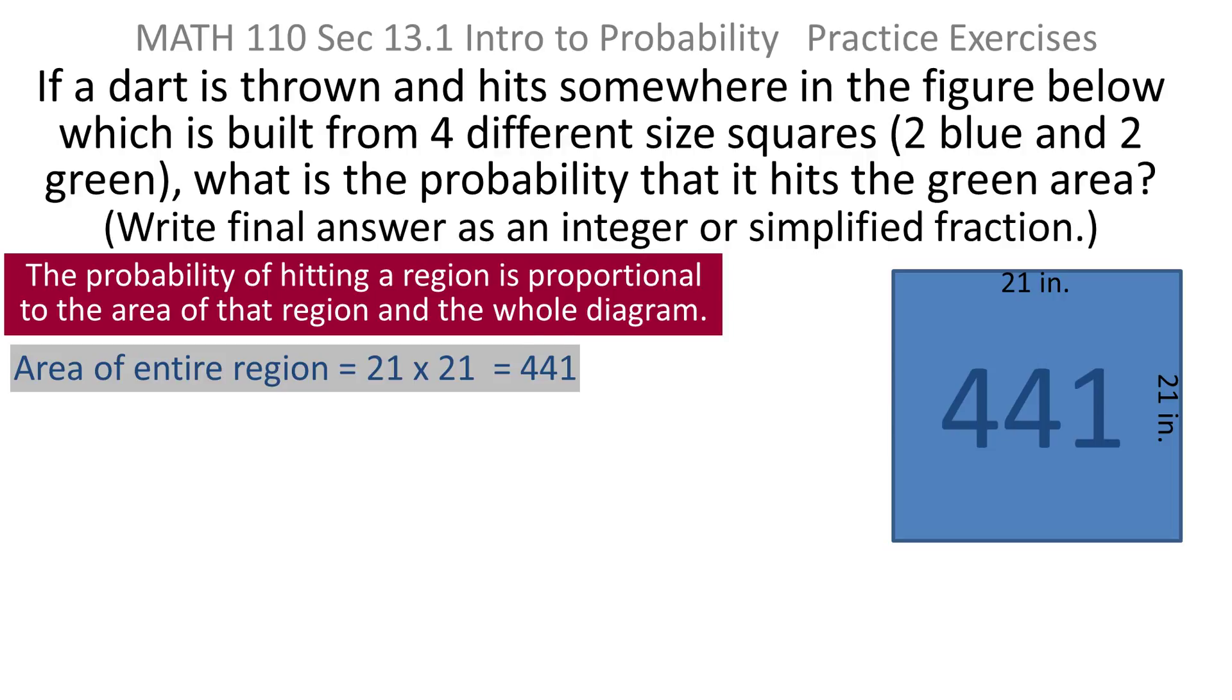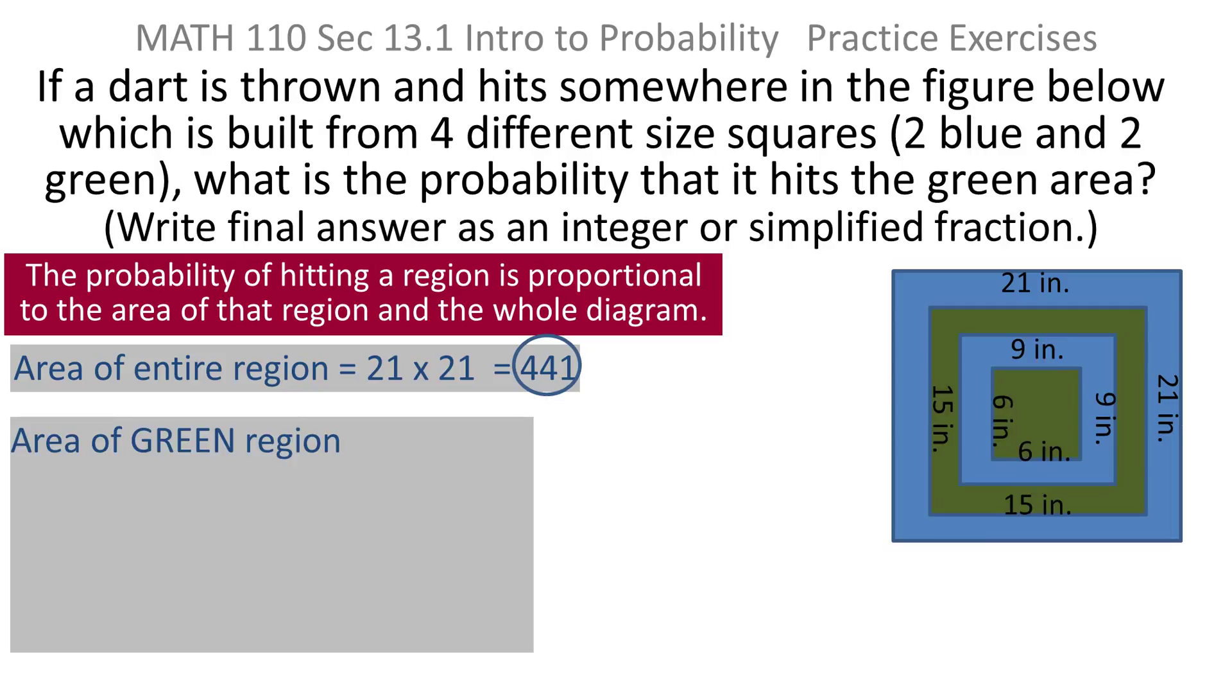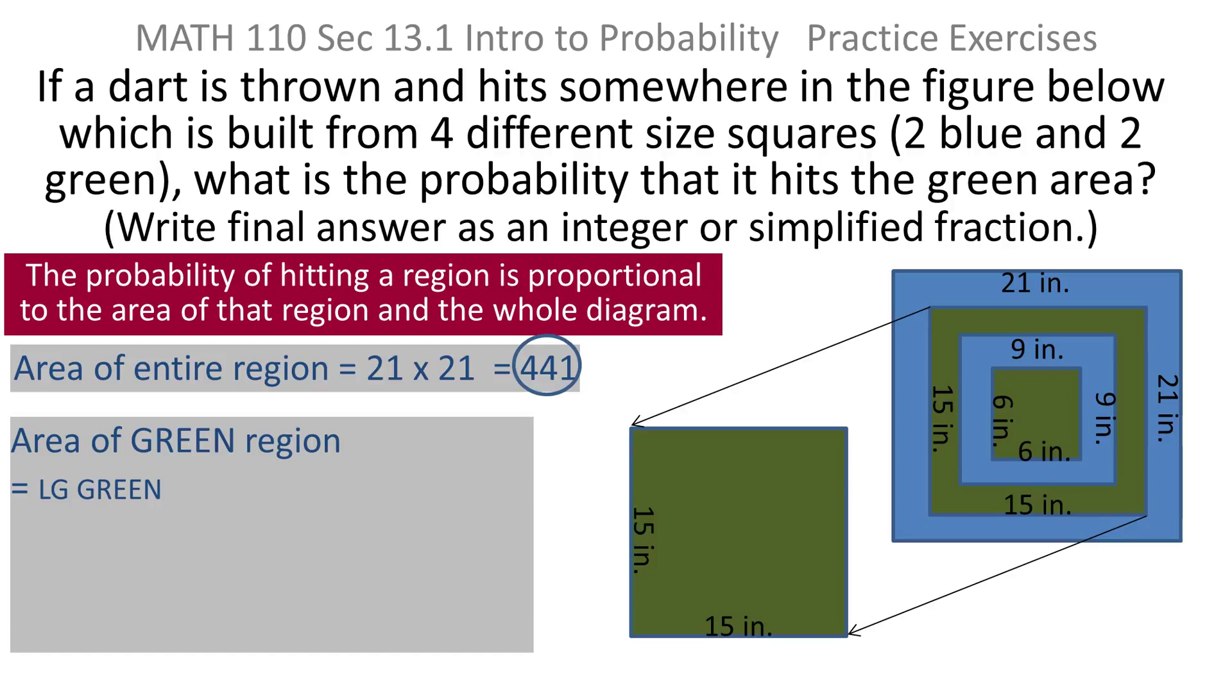And I've got to compare that to the green region. So what I want now is the area of the green region. There's more than one way to do this, but what I would suggest is take their hints. They said this thing is built from four different sized squares. You could actually think about taking this thing apart. If I just pulled out, we're looking for the area of the green region. If I just pulled out the biggest green square, it's this one right here that corresponds to the 15 by 15. That's the biggest green. If I just pull it out and look at it, I'll call it the largest green here.